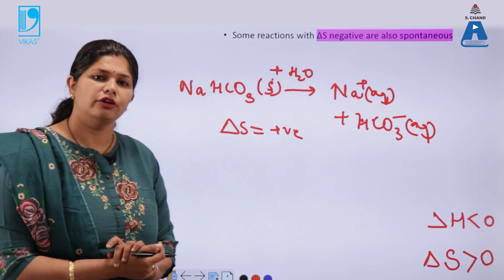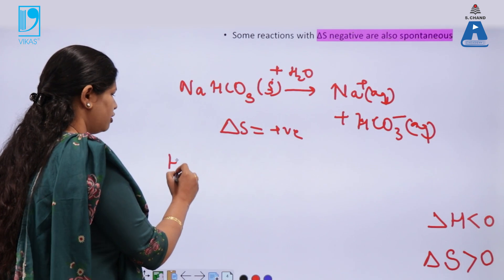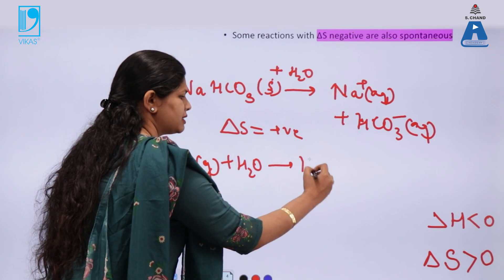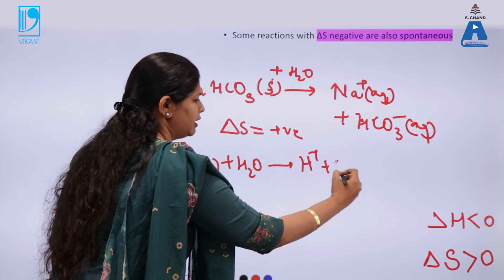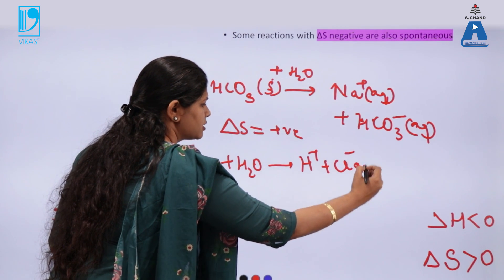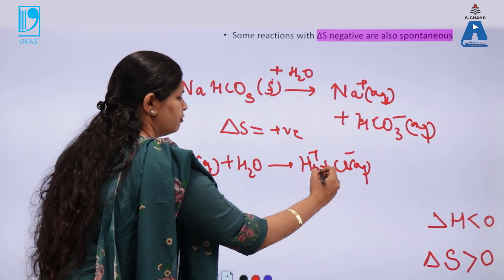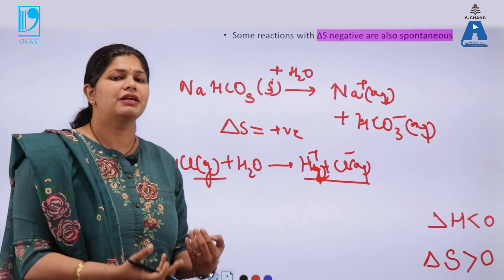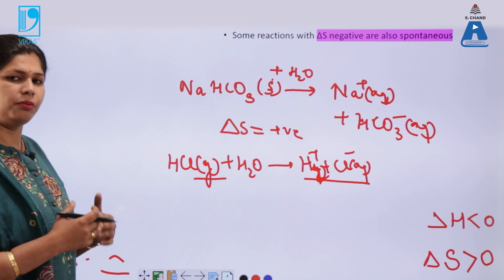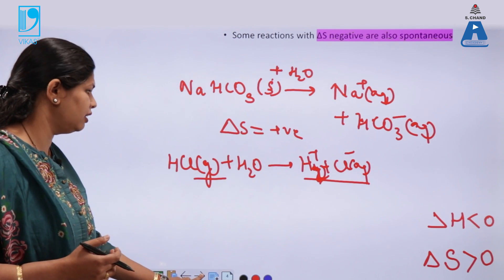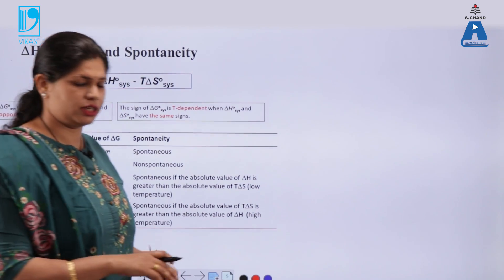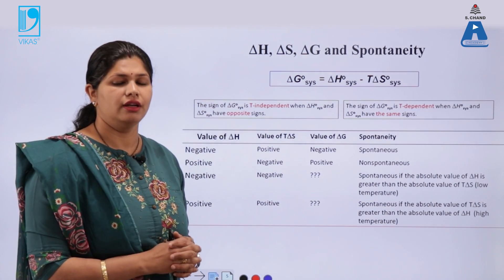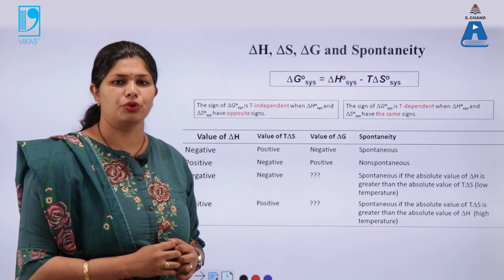Let's take one more example where entropy of the system is negative. Suppose we are dissolving HCl gas in water. H plus ions and Cl minus ions are getting formed in aqueous solution. We are moving from a gaseous system to a liquid system, so the entropy of the system is decreasing, but still this reaction is spontaneous. That means there has to be another factor to answer the spontaneity criteria. The criteria of spontaneity is given by Gibbs free energy, which is a relation between enthalpy, entropy, and temperature.